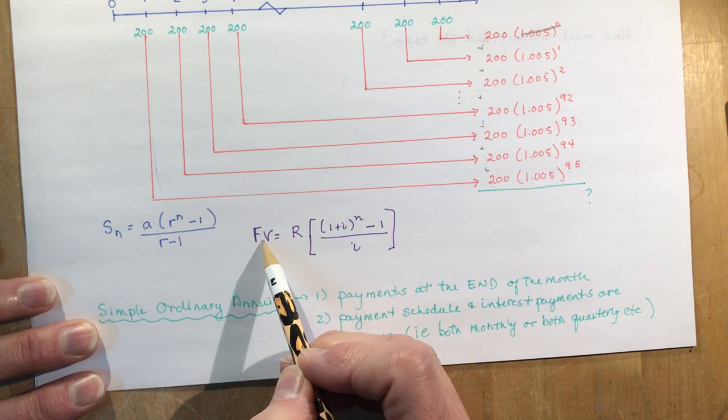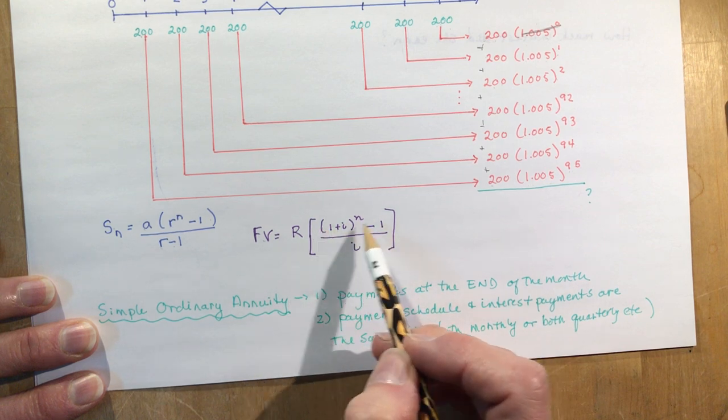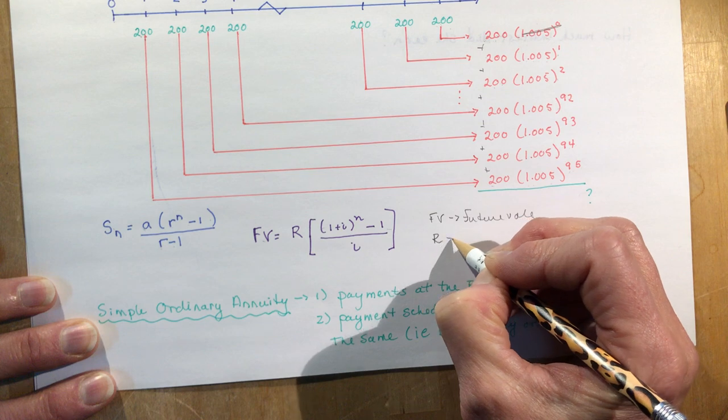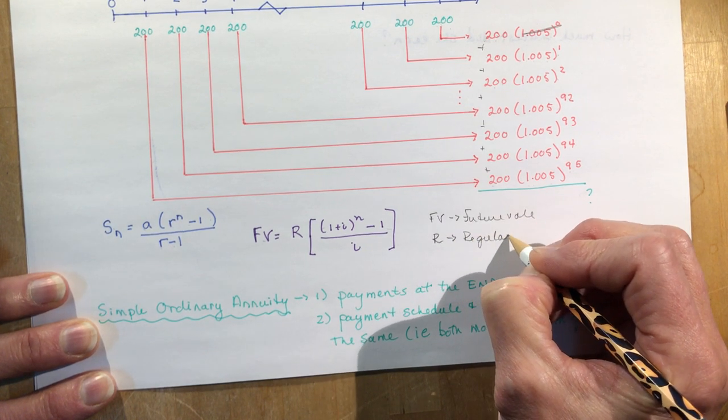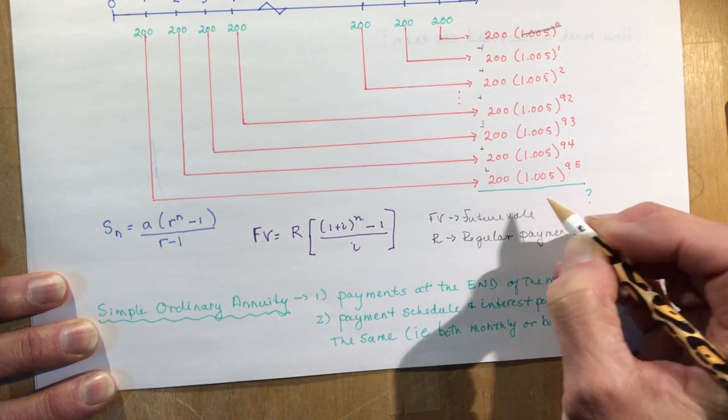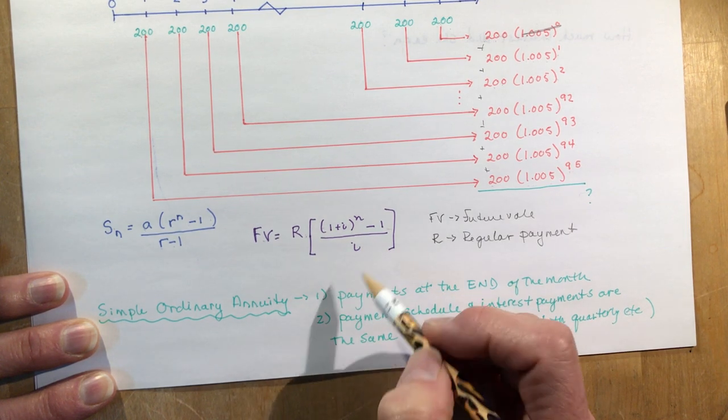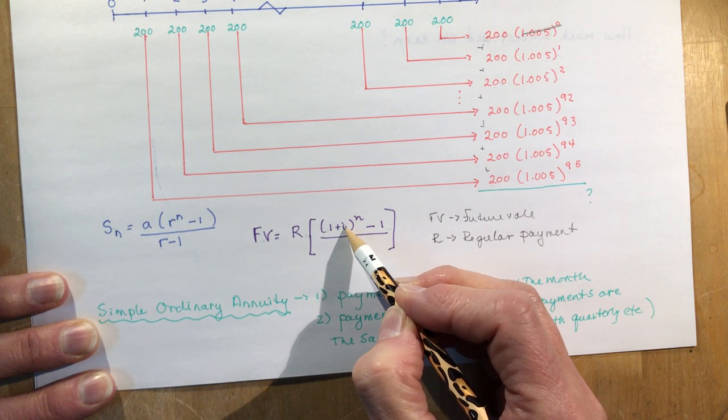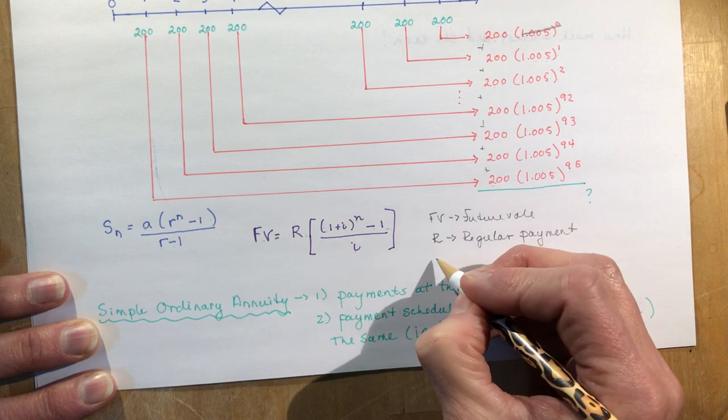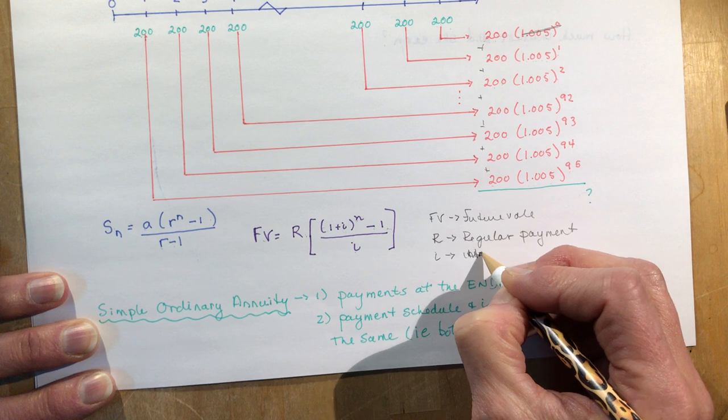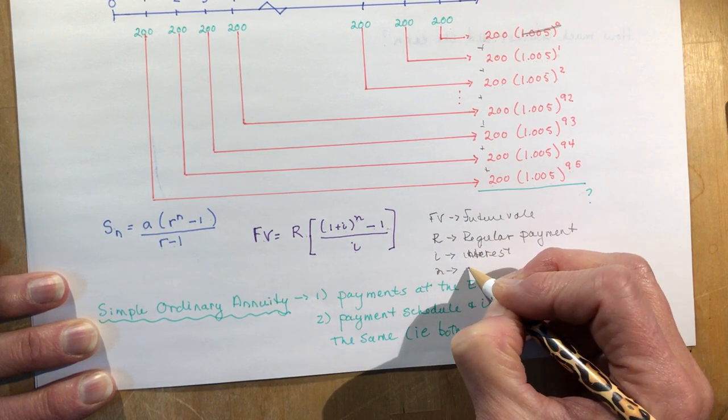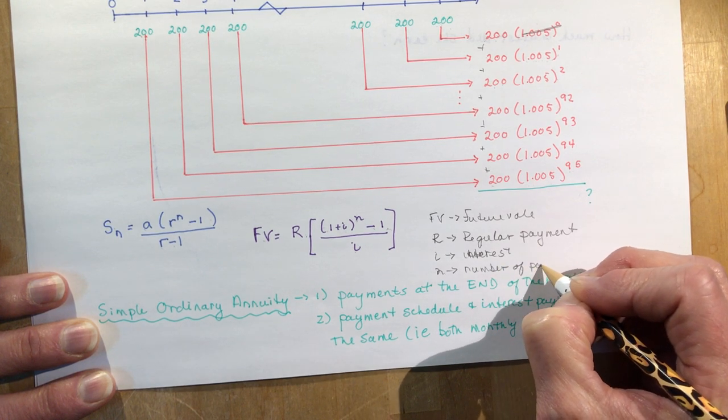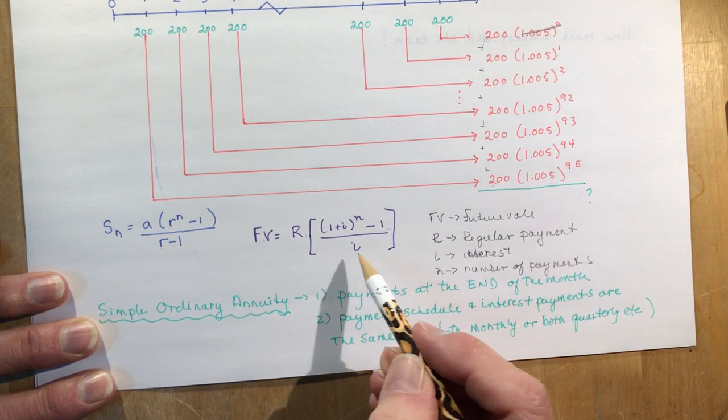That takes us back to this equation, which was the sum of a geometric series. We had A times R to the N minus one over R minus one. But now we have a future value. This is the same equation, only we're plugging in different letters. FV means future value. R stands for regular payment, so that's her $200, regularly paid every month for eight years. And our R value here is one plus I to the power of N minus one over I. So I is simply your interest. And N is your conversion periods, the number of interest payments, number of payments, both regular and interest.